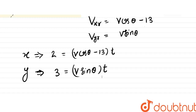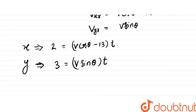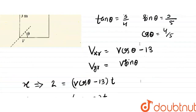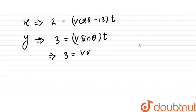When we solve the second equation, 3 equals V sin theta times t. Since sin theta is 3/5, substituting gives 3 equals V times 3/5 times t, so the 3's cancel and velocity V equals 5 by t.